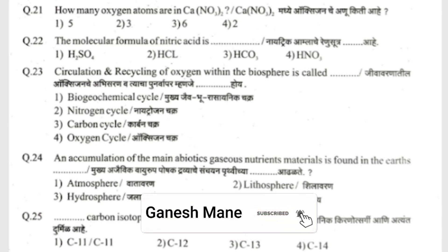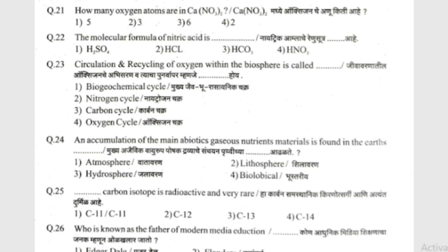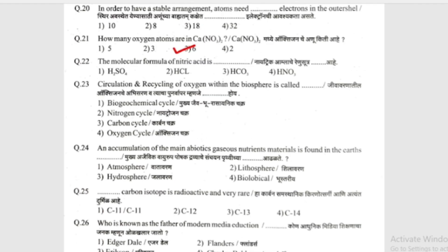The first question is: how many oxygen atoms are in CaO3? The answer is 3.